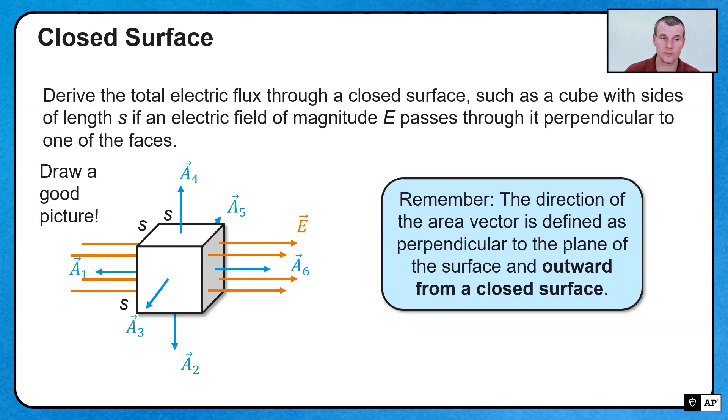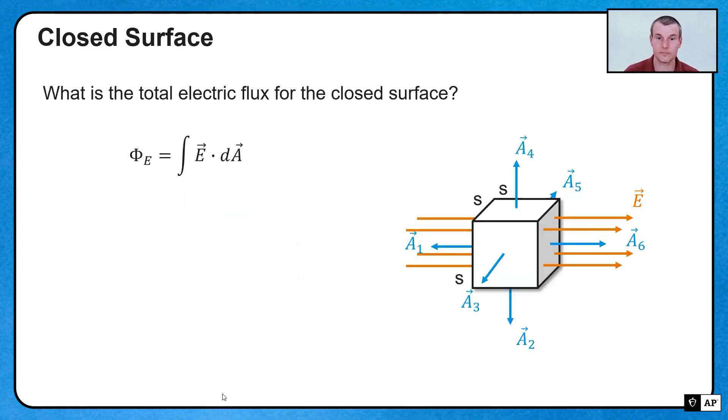Also, I'm going to have all these different surfaces. I'm going to have A1, A2, A3, A4, A5, and then A6. So remember, whenever we draw area vectors, they're always going to be outward from closed surfaces. By definition, that's how we define a surface.